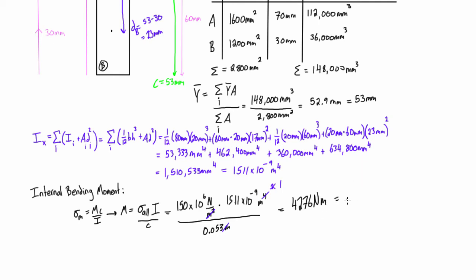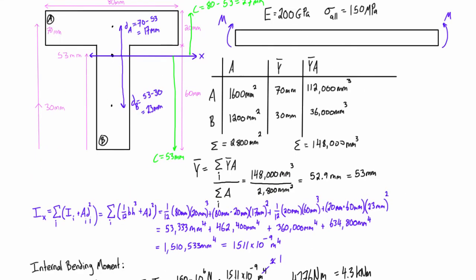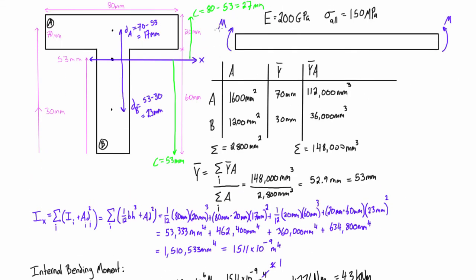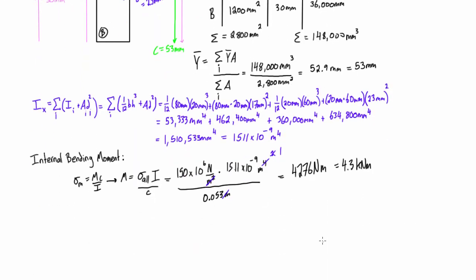You can round that, maybe we'll just say that's 4.3 kilonewton meters. Cool, so that's the internal bending moment and that is also the maximum applied moment that we can apply here in pure bending so that we will be just hitting that allowable stress of 150 megapascals. That'll actually be occurring down here in the extreme tensile fibers. The last thing we want to do now is we want to calculate the radius of curvature when we apply this maximum bending moment.